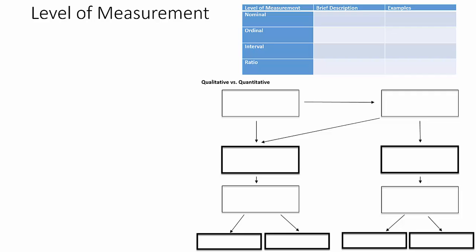The flow chart is going to help us decide what level of measurement would be applicable for various sets of data. We're going to take the levels of measurement — nominal, ordinal, interval, and ratio — and fill them in across the bottom of our flow chart, moving left to right. We'll come back and fill out the spreadsheet as well.